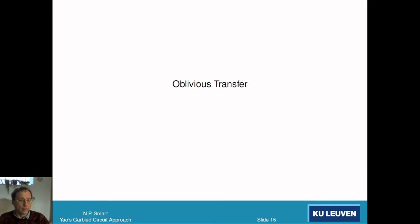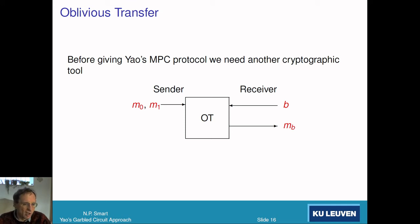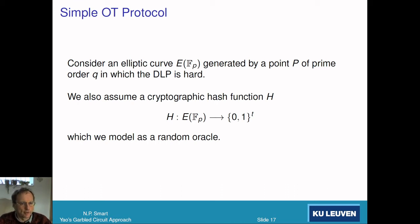The next building block is oblivious transfer, which we need as a component in Yao's protocol. Oblivious transfer is a protocol between a sender and a receiver. The sender has two inputs m0 and m1, the receiver has a selection bit b, and the receiver learns mb. The sender should not learn b, and the receiver should not learn m_{1-b}. It's a fundamental protocol — like a magic box. To illustrate it, consider an elliptic curve generated by a point P of prime order q in which the discrete logarithm problem is hard, and a hash function from the curve to bit strings of length t modeled as a random oracle.